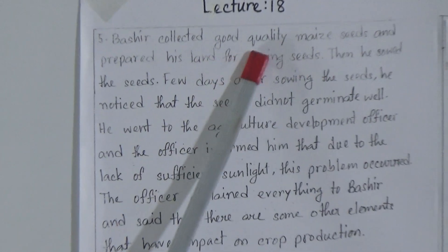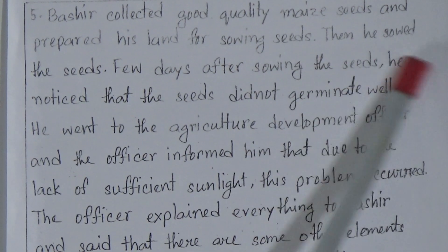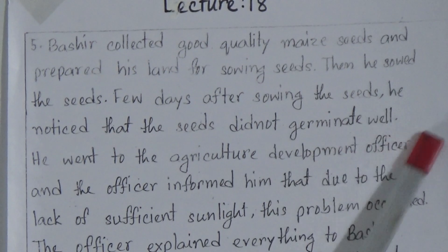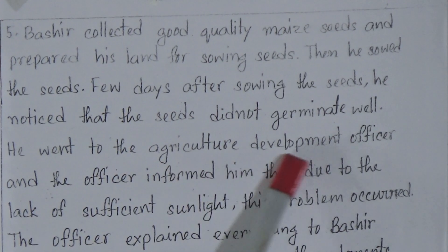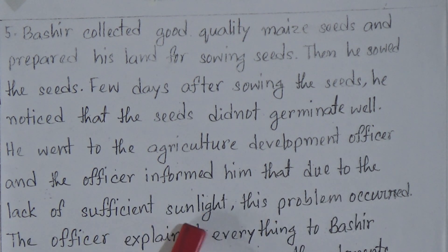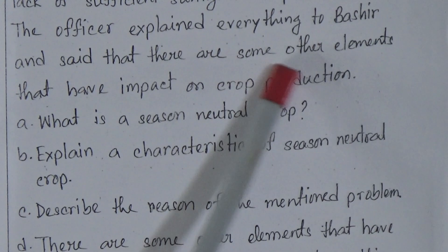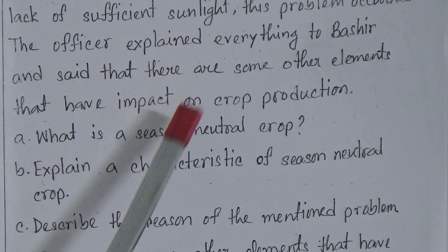Let's start the class. First we will read the stem. Bashir collected good quality maize seeds and prepared his land for sowing seeds. Then he sowed the seeds. Few days after sowing the seeds, he noticed that the seeds did not germinate well. He went to the agriculture development officer and the officer informed him that due to the lack of sufficient sunlight this problem occurred. The officer explained everything to Bashir and said that there are some other elements that have impact on crop production. So this is our stem.